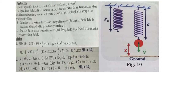Consider figure 10. The free length of the spring is L0 equals 50 cm, K equals 20 N per meter, mass equals 0.2 kg. The figure shows the ball, which is taken as a particle, in a certain position during its descending at an altitude relative to the ground. This altitude is Z equals 30 cm, and its speed at that position is 1 m per second. The length of the spring in this position is L equals 60 cm. Determine in this position the mechanical energy of the system — ball, spring, earth — taking the ground as the reference level for the gravitational potential energy.